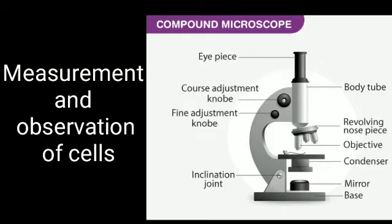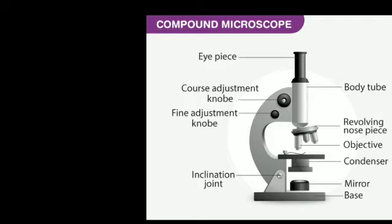Measurement and observation of cells: Anton van Leeuwenhoek constructed the first microscope in 1673. For the first time, he observed live bacterial and protozoan cells under this microscope. Cells are minute in size and can be seen only with a compound microscope. The units used for measuring the sizes of cellular structures are micrometer and nanometer. One centimeter equals 10 millimeters, one millimeter equals 1000 micrometers, and one micrometer equals 1000 nanometers. Observe the diagram of the compound microscope shown on the screen — you have to draw and label it properly in your classwork.